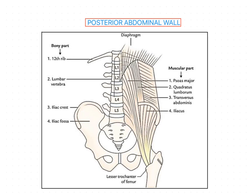Now we will see what bones form the skeletal framework of the posterior abdominal wall. One is the lumbar vertebrae from L1 to L5. It also includes the 12th rib and the part of the hip bone which forms the pelvis. We have already discussed the lumbar vertebrae, the pelvis part, and the 12th rib in the thoracic region.